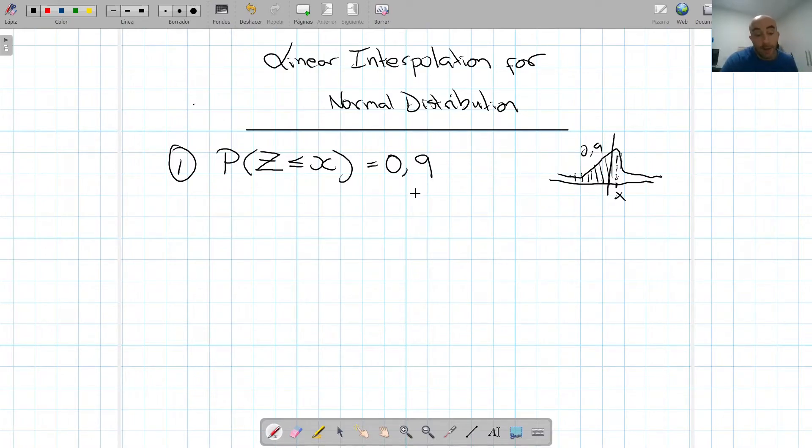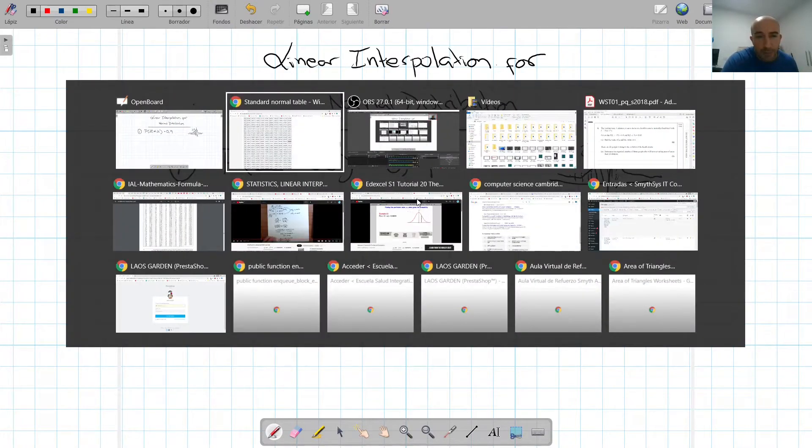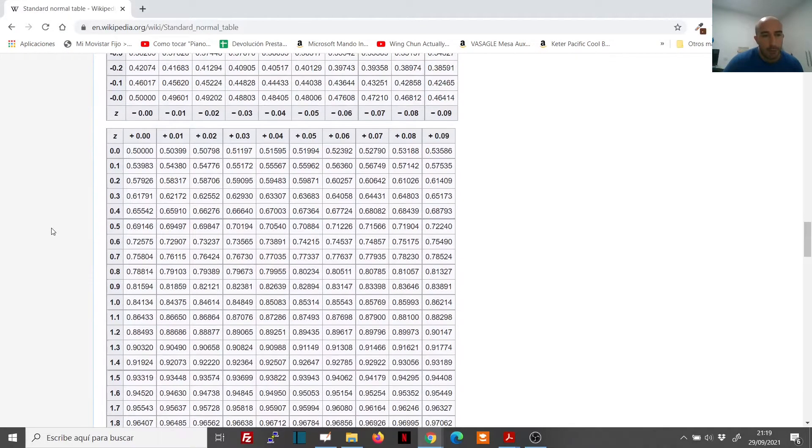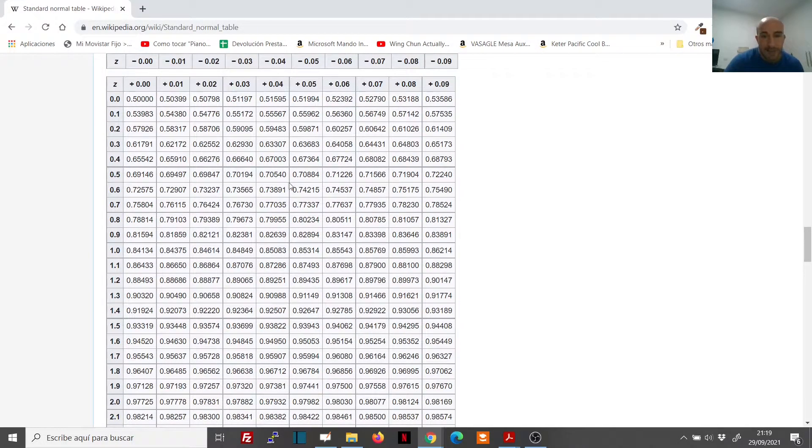So if we go to our tables, and this is a standard table where the variables are first row, the first digits and the first column of the first digits, and the first row the second digits after the decimal point. Inside the table is the probability. So we'll have to look for the value 0.9 in the probability.